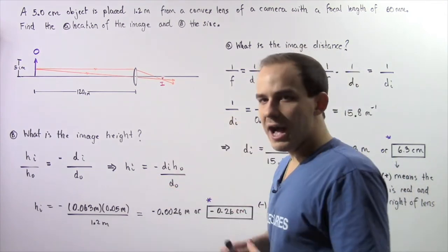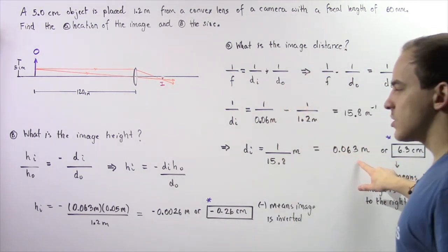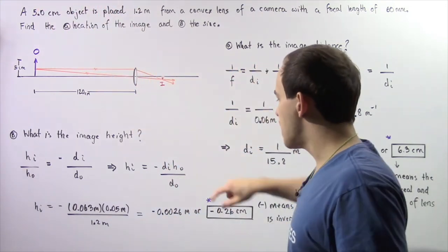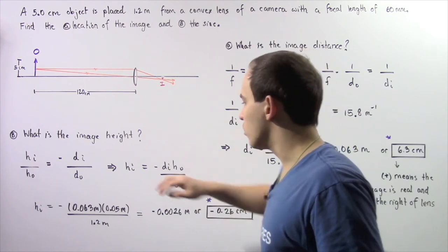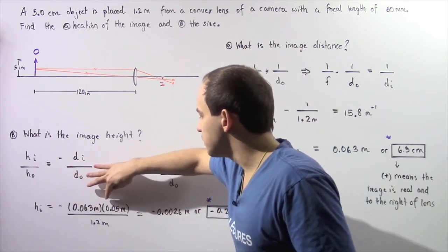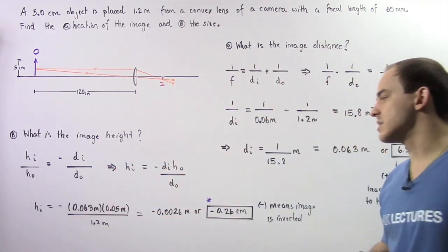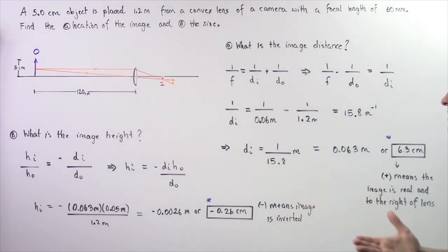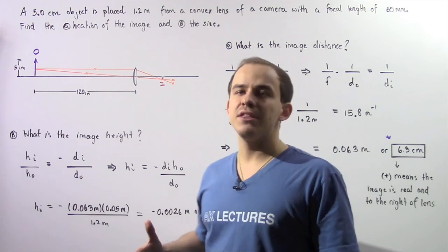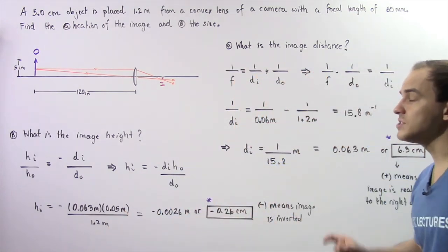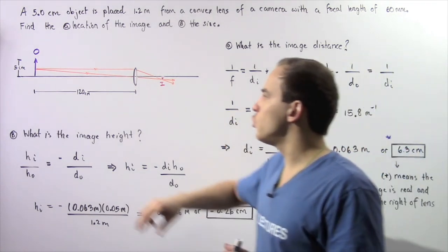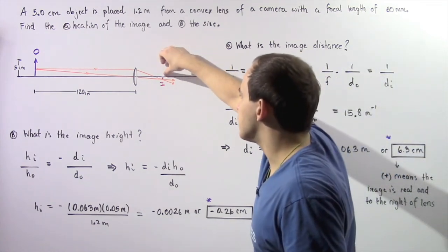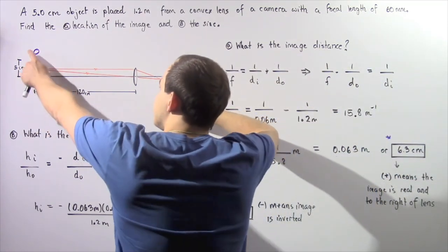We know Di was calculated in part A as 0.063 meters. The object height is 5 centimeters or equivalently 0.05 meters, and the object distance is 1.2 meters. So the negative of 0.063 meters multiplied by 0.05 meters divided by 1.2 meters gives us about negative 0.0026 meters, or equivalently negative 0.26 centimeters. The negative sign simply implies that the image is inverted — it's upside down relative to our object, which is right side up. So if we draw our image, the image is given by I and the object is given by O.